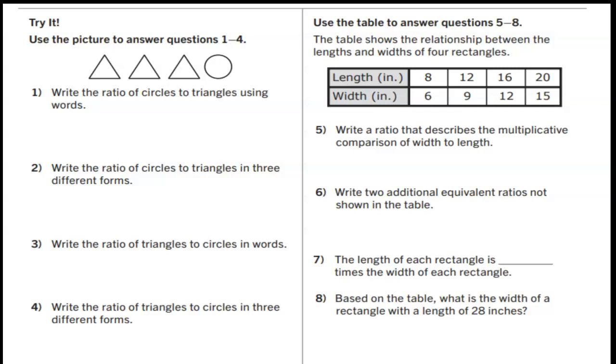Number one. Write the ratio of circles to triangles using words. Pause the video and answer the question. When we write this ratio we're going to write circles to triangles. Remember that order matters. So that's one circle to three triangles.